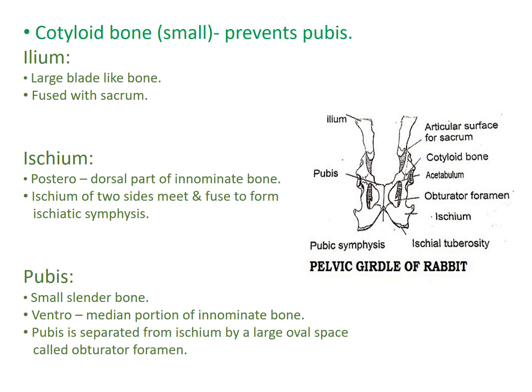Coming to the Ilium in mammals: Ilium is a large blade-like bone, as you can see in the diagram, fused with the sacrum and provided with an articular surface for the sacrum. Ilium is followed by Ischium, which forms the posterior dorsal part of the innominate bone. Both sides of the Ischium bone meet and fuse to form the Ischiatic symphysis. Ischium is followed by Pubis, which is a small slender bone forming the ventromedial portion of the innominate bone. Pubis is separated from Ischium by a large opening known as the obturator foramen.